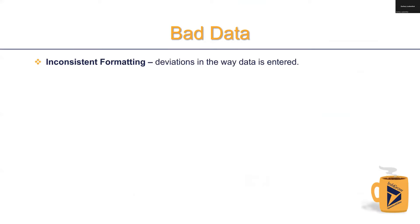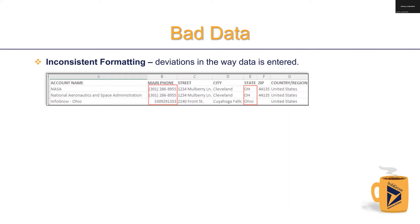Similar to our duplicate example, but quite different, is inconsistent formatting, which consists of deviations in the way data is entered. Looking at the figure, we can see differences in phone number formatting as well as state formatting. Inconsistent data becomes a headache when trying to do any sort of accurate reporting. For example, if we query a report that requires accounts in Ohio and we queried on 'OH', the results would be missing the one spelled out as 'OHIO' and vice versa, leading to an inaccurate report.